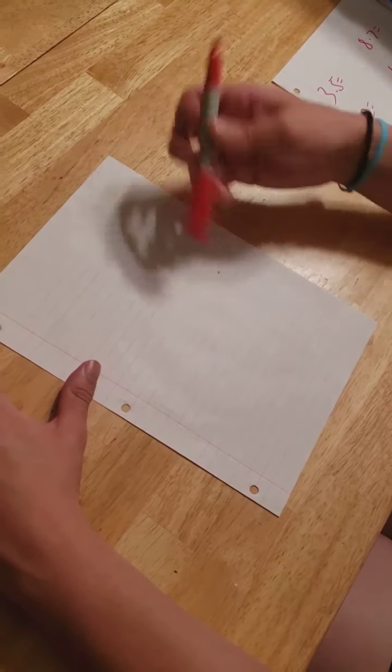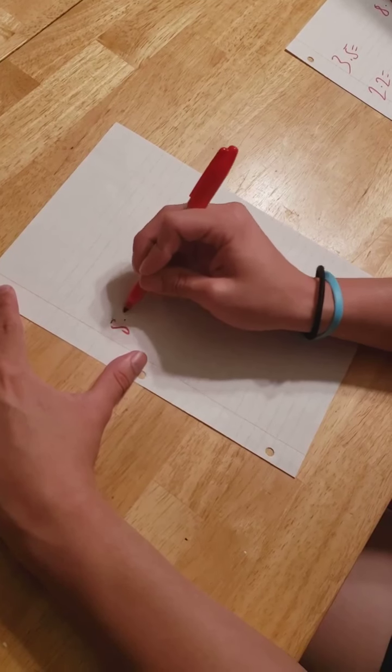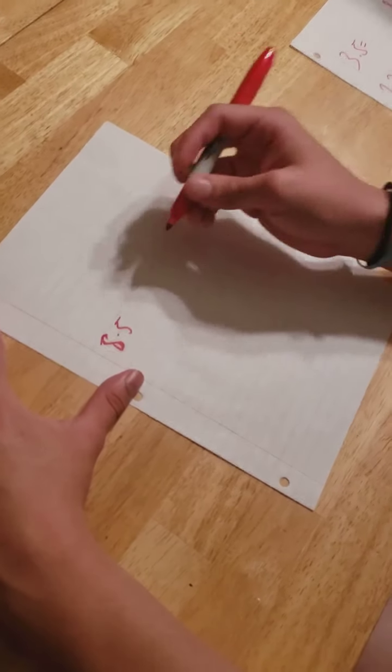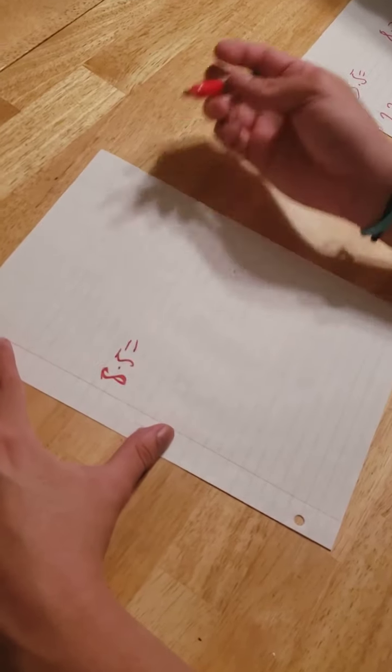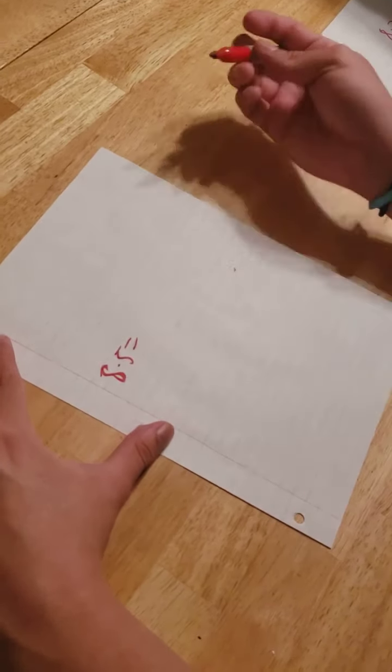So primarily when you see rounding, you see decimals. And when you see decimals, they're normally like this. So you see an 8.5.